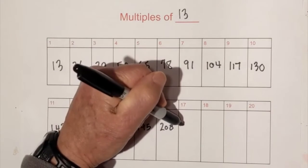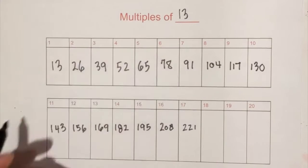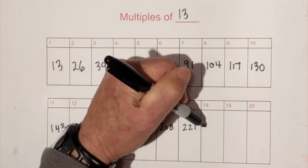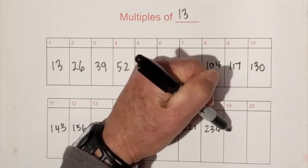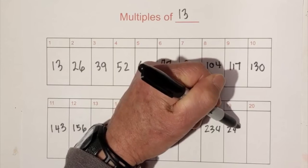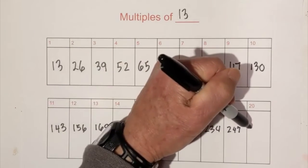That's barely an 8. You can barely see it. 221, 234, 247, and then 20 times 13 is 260.